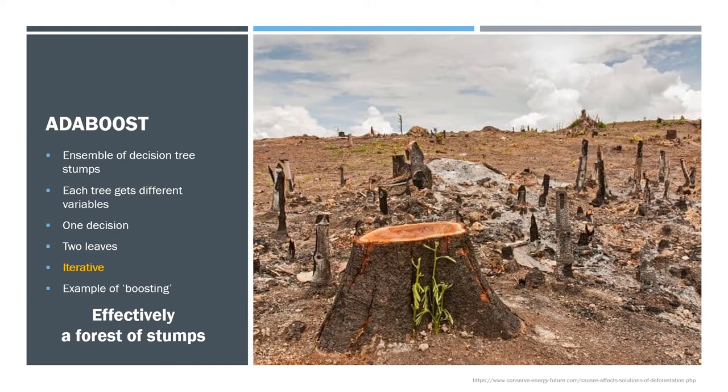So AdaBoost uses a collection of decision tree stumps rather than full trees. Each tree gets different variables in the same way as random forests, but the trees only get to make a single choice. The main difference between boosting techniques such as AdaBoost and a bagging approach like random forests is that boosting is iterative. So AdaBoost is effectively a forest of stumps.